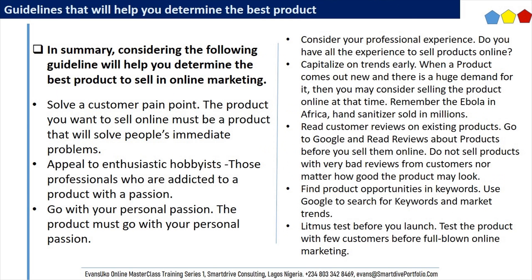In summary, the following guidelines will help you determine the best product to sell in online marketing. Solve a customer pain point — the product you want to sell must solve people's immediate problems. Appeal to enthusiastic hobbyists — those professionals who are addicted to a product with a passion. Go with your personal passion — the product must align with your personal passion. Consider your professional experience — do you have the experience to sell products online? Capitalize on trends early — when a product comes out new and there is a huge demand for it, consider selling the product online at that time.